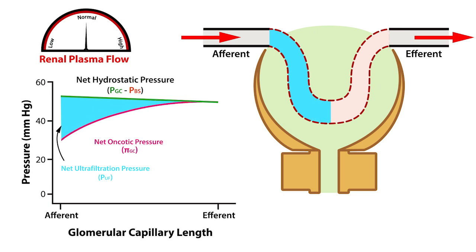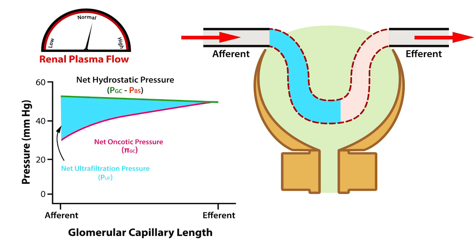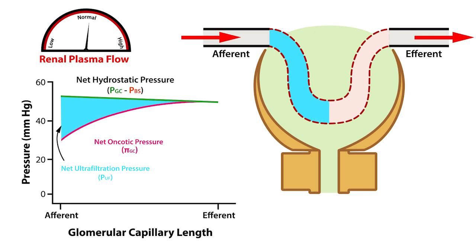Briefly, as renal plasma flow decreases, a larger fraction of the filtrate passes into the Bowman space, which has the net effect of increasing the concentration of the nonpermeable solutes within the glomerular capillary. This rise in net oncotic pressure occurs in a nonlinear manner, which is why most of the filtration along the glomerular capillary occurs unevenly.